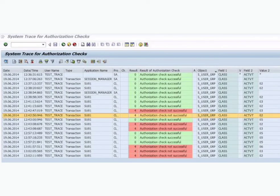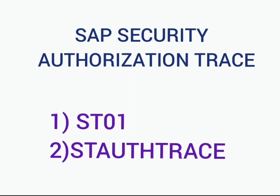The missing trace screen for ST/AUTH TRACE resembles that of ST01. These are the different ways of doing authorization traces in SAP. In summary: ST01 is specifically used to trace on a specific instance, whereas ST/AUTH TRACE can be used for both a specific instance and system-wide. Based on the requirement, you will choose either T-code.